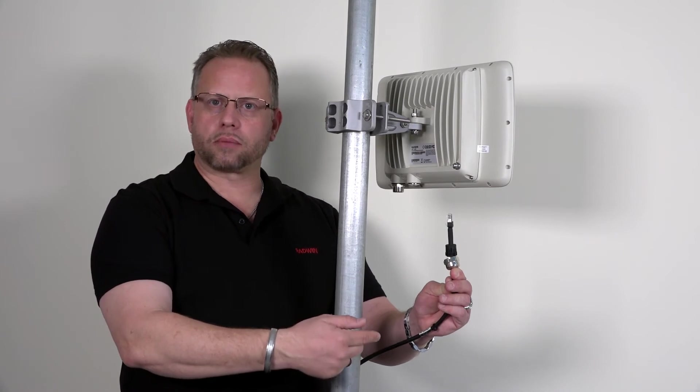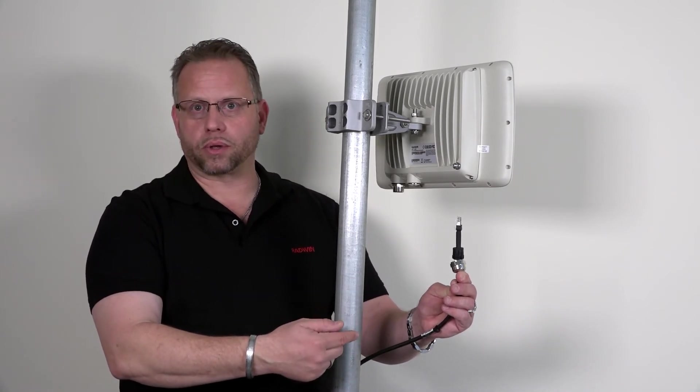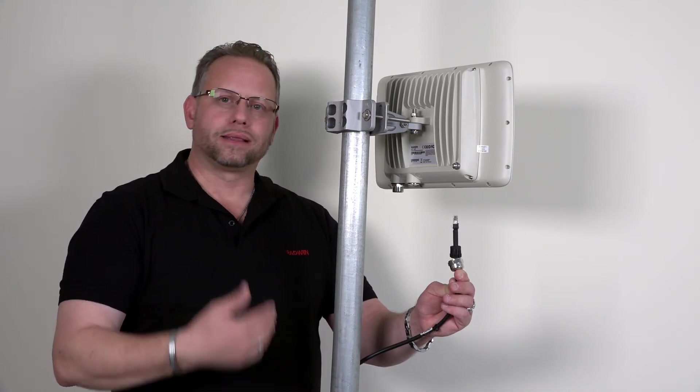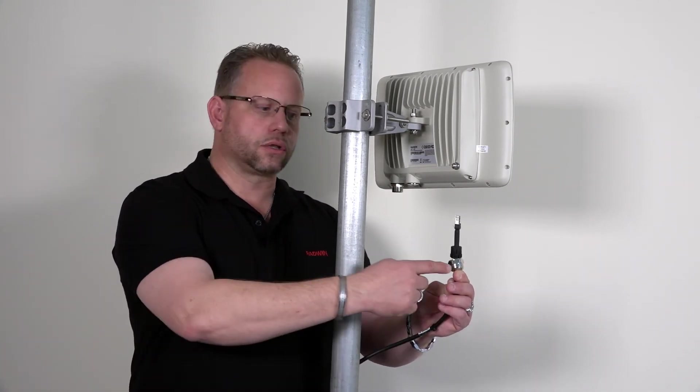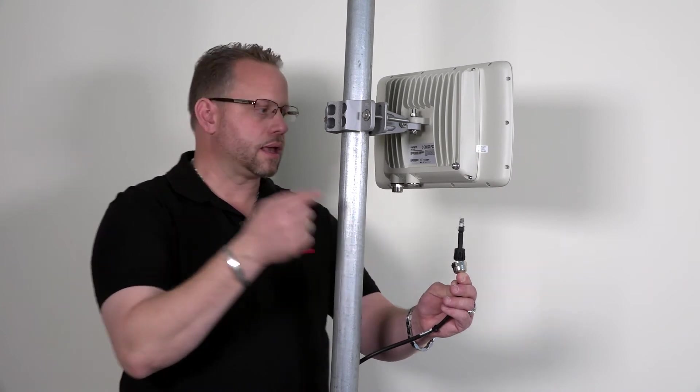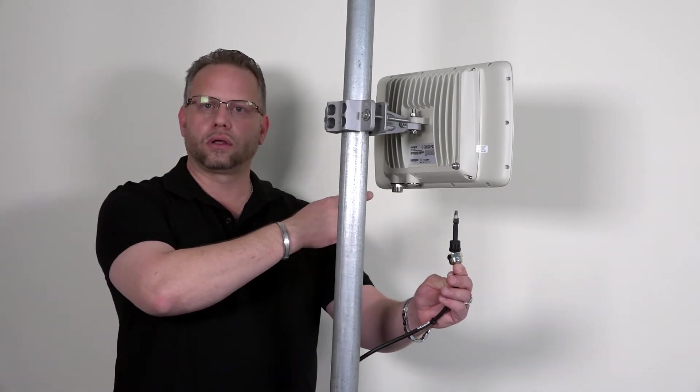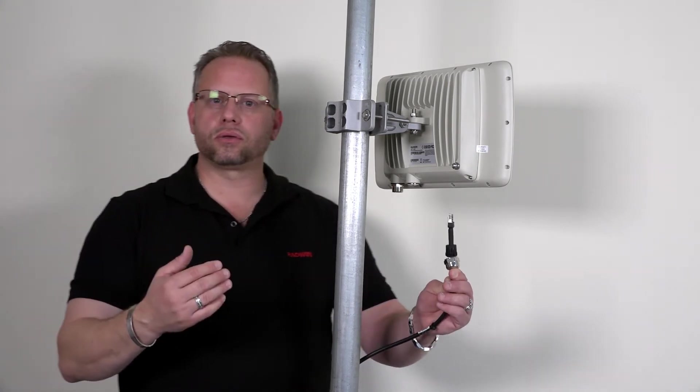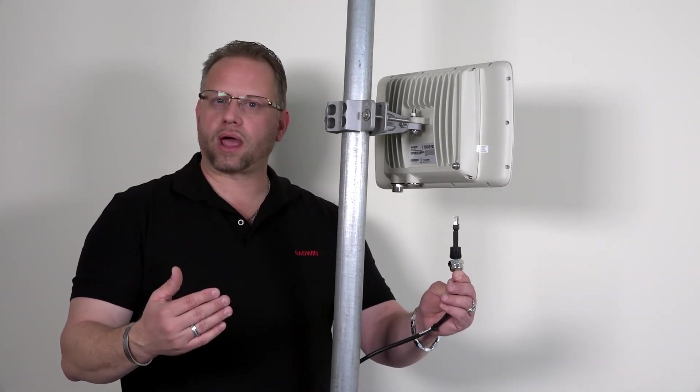Pre-assembled cables are available from Radwin but should you decide to make them in the field yourself the hardware box includes this cap and gland and of course the connector for the connection point. We recommend that you use shielded Category 5e cable.